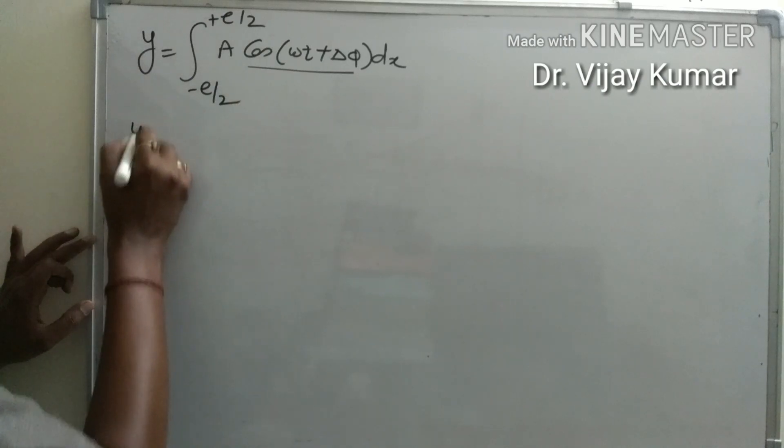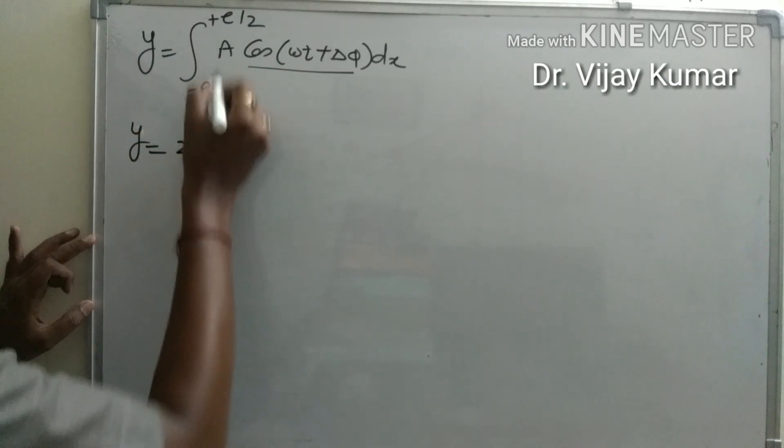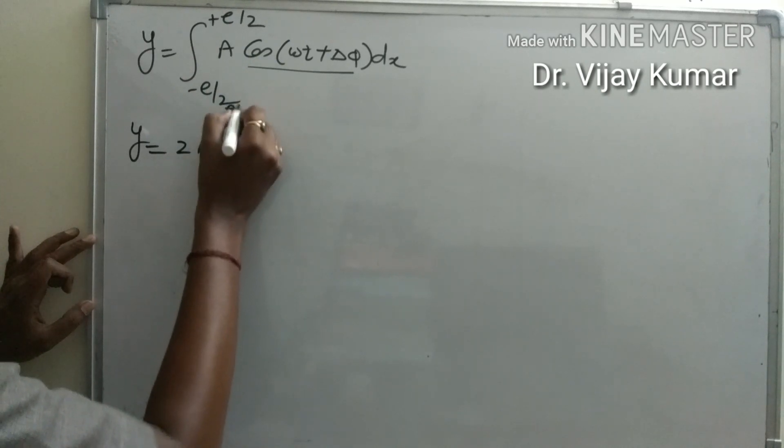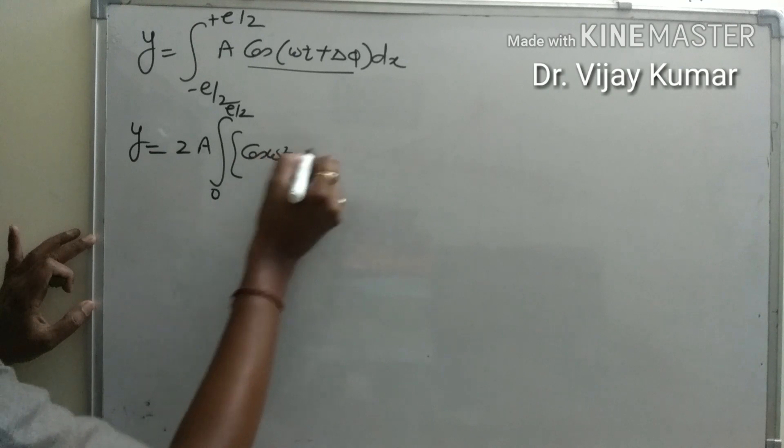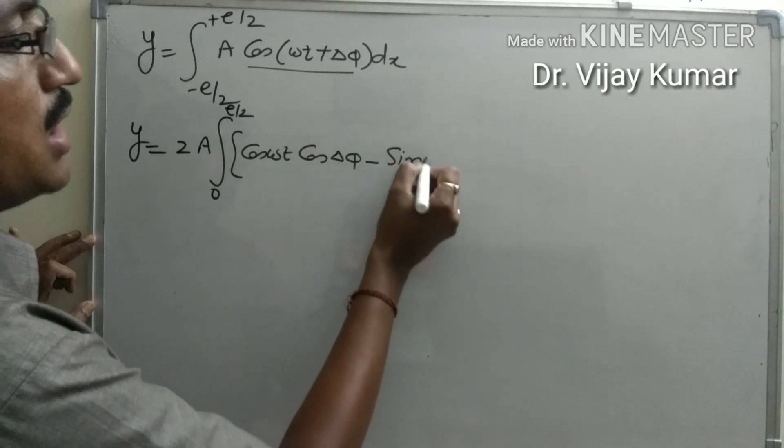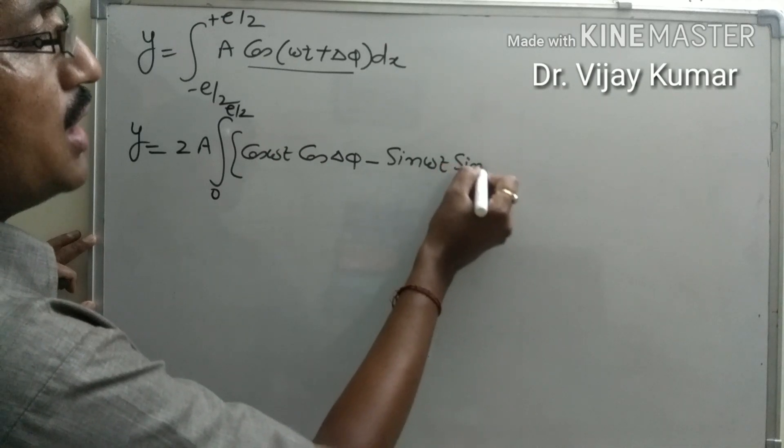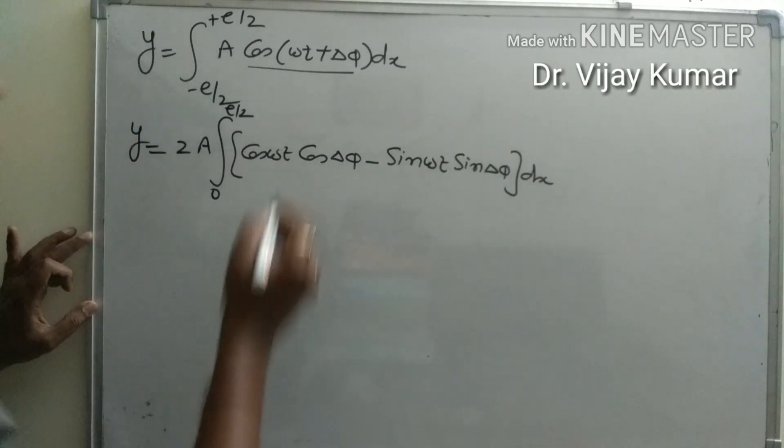we expand this term and it becomes y equals twice a, with the limit from zero to e by 2. We can write it as cos(omega t) cos(delta phi) minus sin(omega t) sin(delta phi) dx.